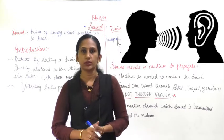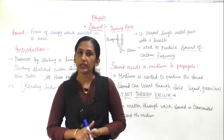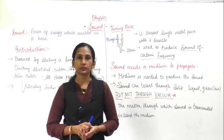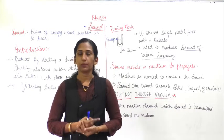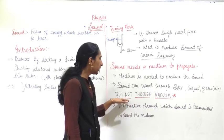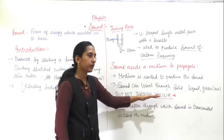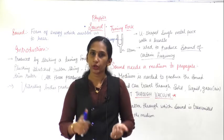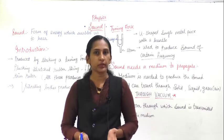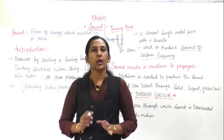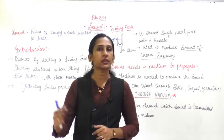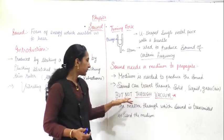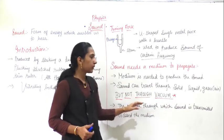Sound needs a medium to propagate. Sound can travel through liquid and gas, but it cannot pass through vacuum — this is very important. When an astronaut is standing on the moon and talking, another person cannot hear them because there is no atmosphere and no medium on the moon. It is all vacuum, so sound has no medium to propagate through. Sound can travel through solids, liquids, and gases, but not through vacuum.